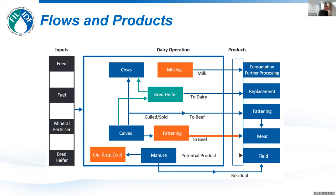Similarly, if an operation has animals raised up to a certain weight and then sold into the beef sector, and the on-farm accounting can track inputs associated with that fattening operation, those emissions can be separated and allocation is not needed. Manure is a particularly interesting case: it can be recycled internally — in which case there's no allocation needed — or sold as fertilizer. The IDF guide recommends manure be treated as a residual, carrying no burden and receiving no credit.